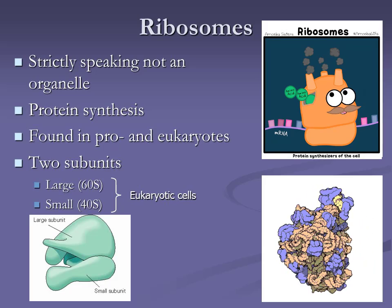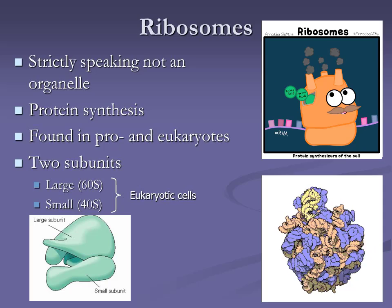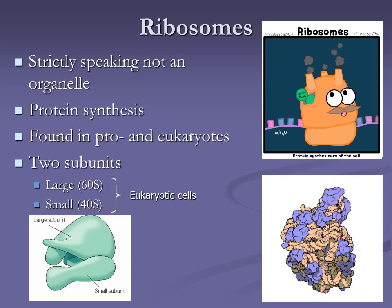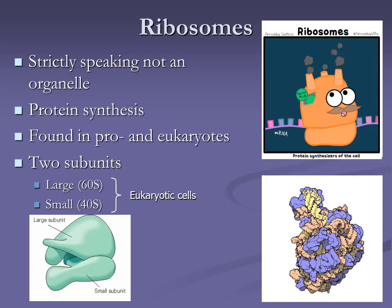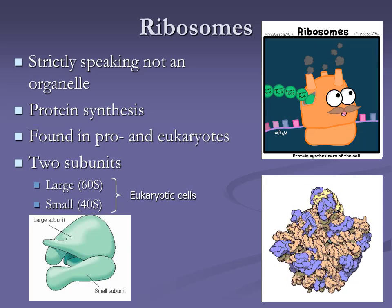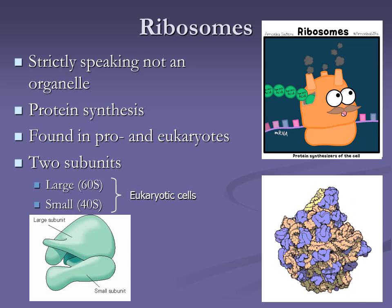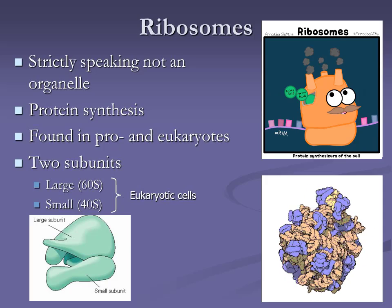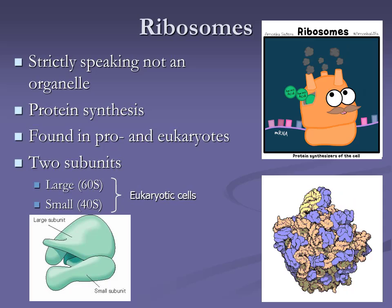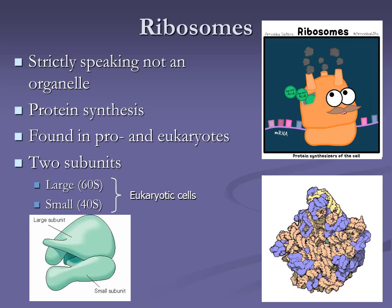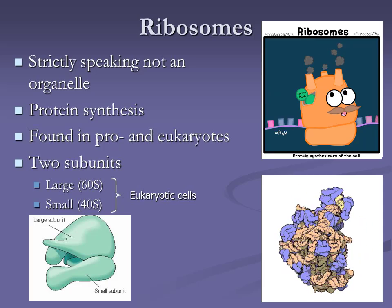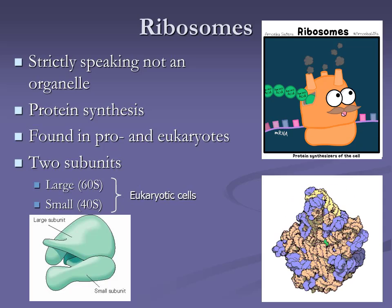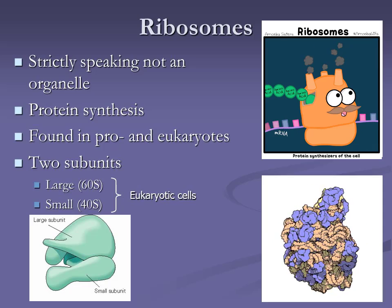Student question: Are the nucleus and ER directly connected? Answer: Not the inside of the nucleus where the DNA is, but the space between the inner and outer nuclear membranes is continuous with the space inside the ER. They're labeled as different organelles because they were identified as looking separate first; only later was the connection appreciated, though there is also a functional distinction.